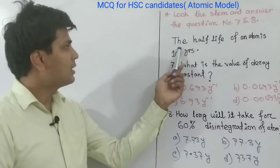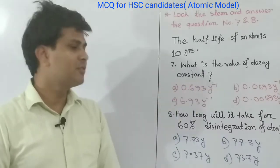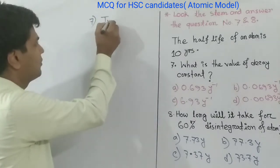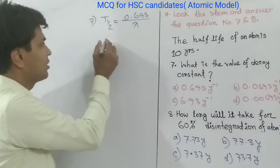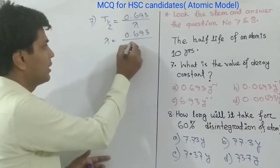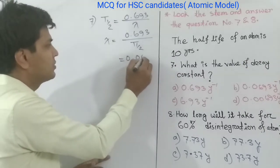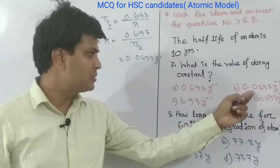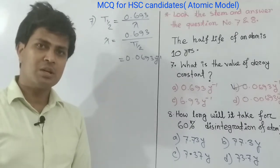MCQ 7: The half-life of an atom is 10 years. What is the value of the decay constant? Using lambda equals to 0.693 divided by t half, with t half equals to 10 years, the answer is 0.0693 per year. The correct option is B, 0.0693 year inverse.